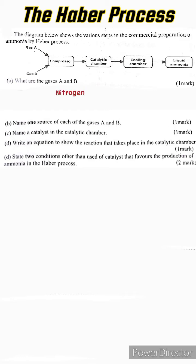Since they haven't specified anything regarding the gases, the order does not matter. So gas A could be nitrogen or hydrogen. Part b: Name one source of each of the gases A and B. Nitrogen is obtained from fractional distillation of liquid air. Hydrogen can be obtained from natural gas or from cracking of long chain alkanes.